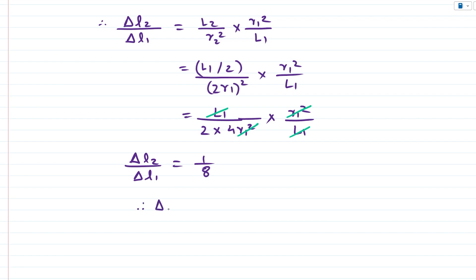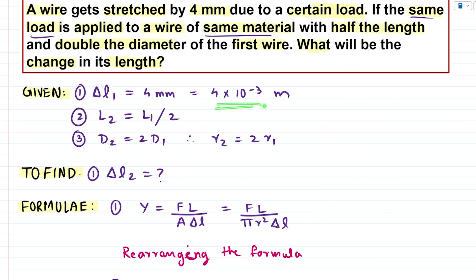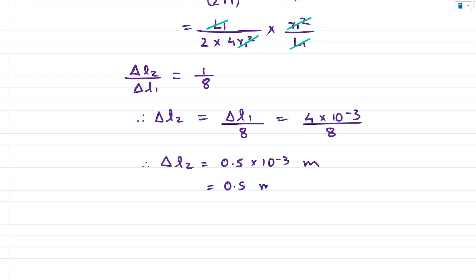Therefore delta L2 equals delta L1 divided by 8. The value for delta L1 is 4 into 10 raised to minus 3 meters. Substituting, delta L2 equals 4 into 10 raised to minus 3 divided by 8. Since 4 divided by 8 is 0.5, delta L2 equals 0.5 into 10 raised to minus 3 meters, which can be written as 0.5 millimeters. So this is the change in length for wire 2 — delta L2 equals 0.5 millimeters.